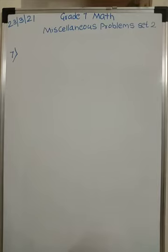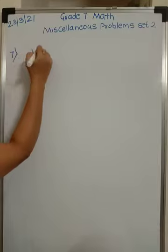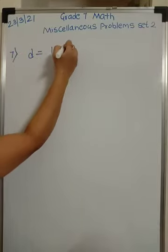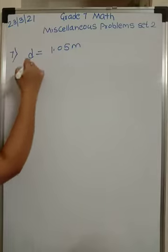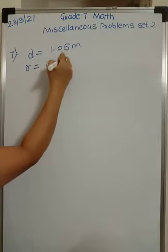Diameter of a wheel of a cart is 1.05 meters. So diameter is given as 1.05 meters. How much distance will the cart cover in 1000 rotations? So rotations given is 1000.